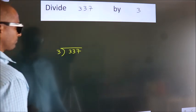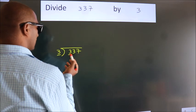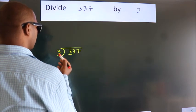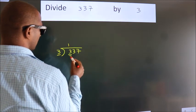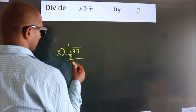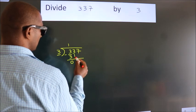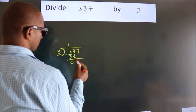Next, here we have 3. When do we get 3 in the 3 table? 3 once is 3. Now we subtract and get 0. After this, bring down the beside number, so 3 down.